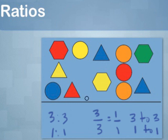Ratios are a way of understanding an arrangement of different objects and the numerical relationships among different subsets of those objects.